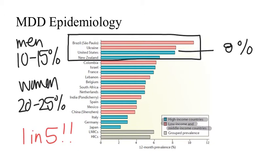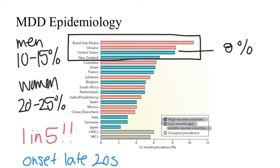Depression may occur at any age, even among children and the elderly, although the average age of onset is the late 20s. Depression is common in children and adolescents, up to 20% in some age groups. Suicide is the second leading cause of death among individuals aged 10 to 34, a risk we will discuss further when we cover antidepressants.